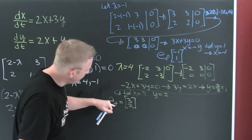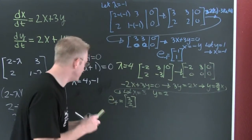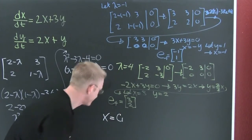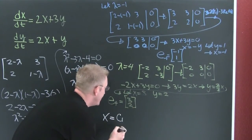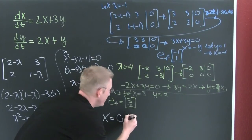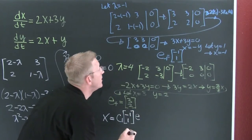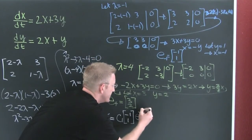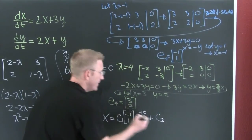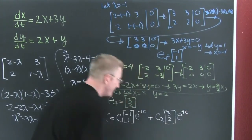So now I've got my eigenvalues and eigenvectors and I'm finally ready for my general solution. My general solution is going to be C1 times the eigenvector minus one, one times e to the minus one t, plus C2 times three, two times e to the four t.